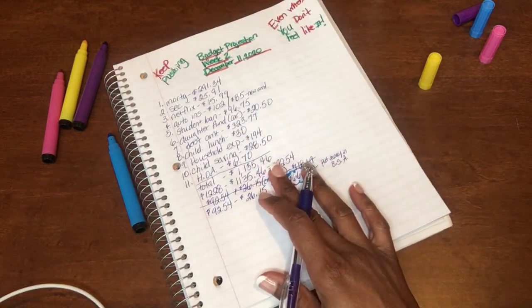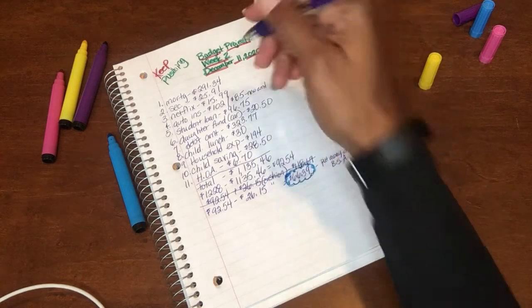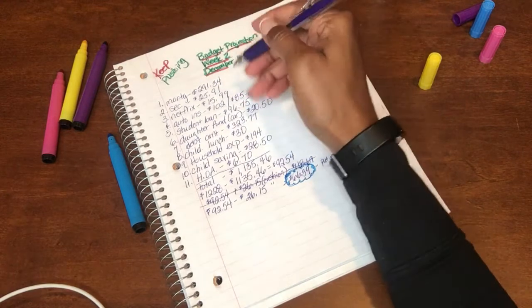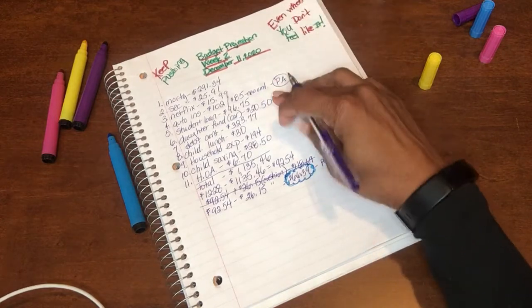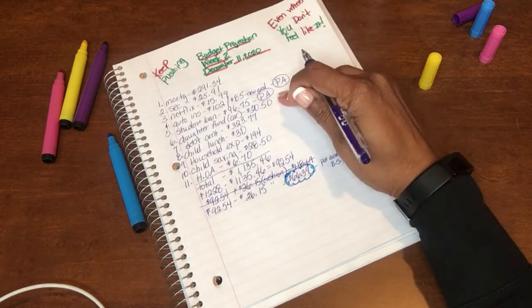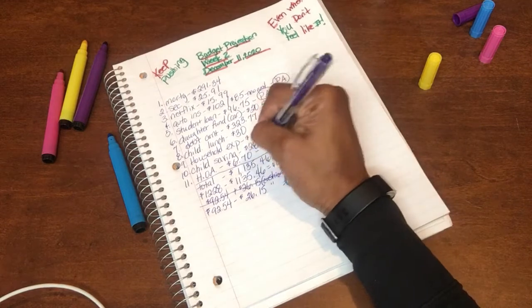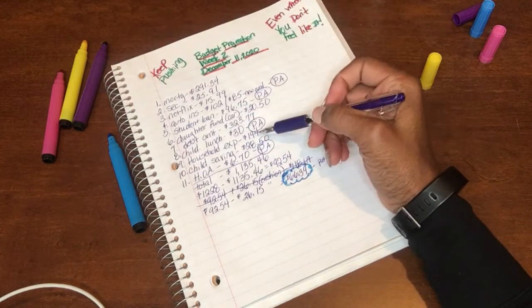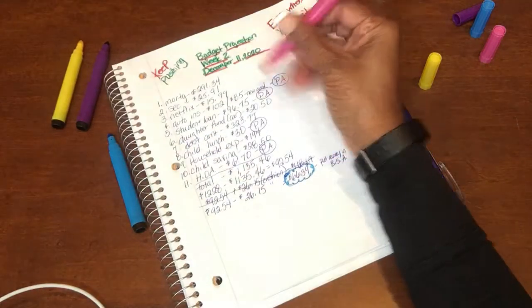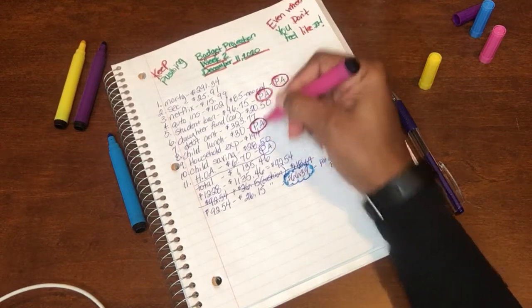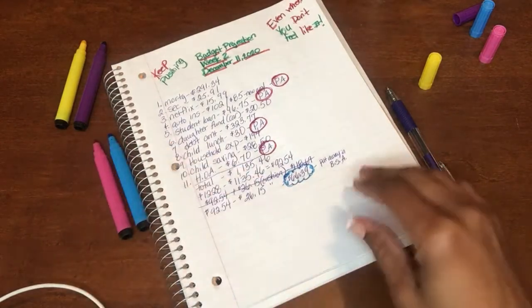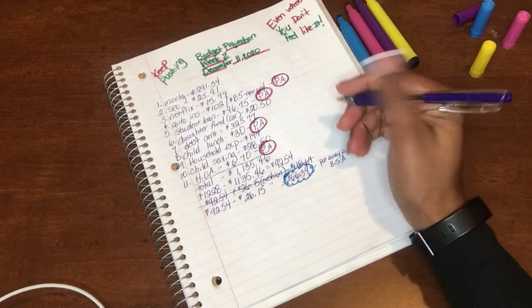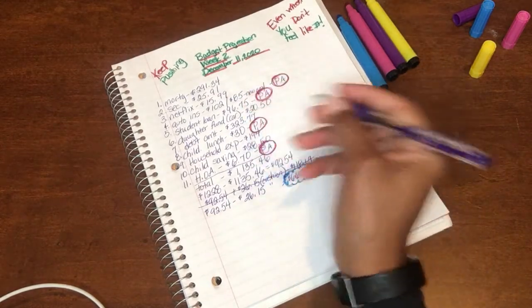After that, the next thing we're going to do is we're going to go through and we're going to put a PA beside those items that we are not paying for this week. So let's see what items will not be paid out this week. It would definitely be the auto insurance, that's the student loan, and the homeowners association fee, and the lunch account. Everything else are items that will take place this week. So next we will put a pink circle around all of our put away items.